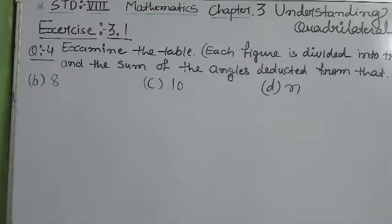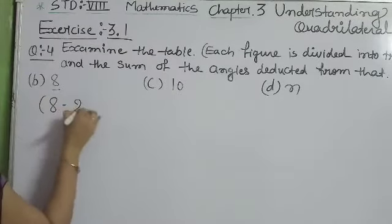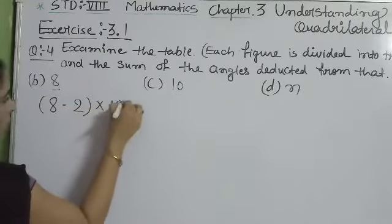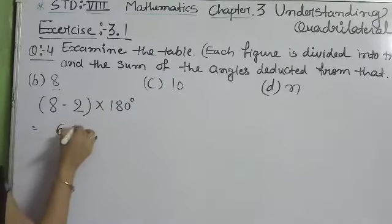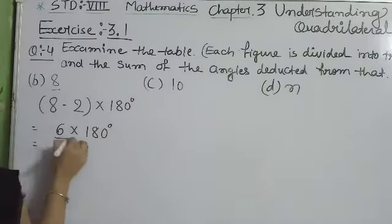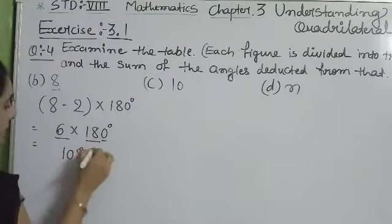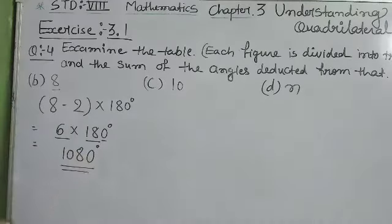Now for 8 sides, we will do 8 minus 2 into 180. 8 minus 2 is 6 into 180. 6 times 18 is 108, add 0, so answer is 1080 degrees.